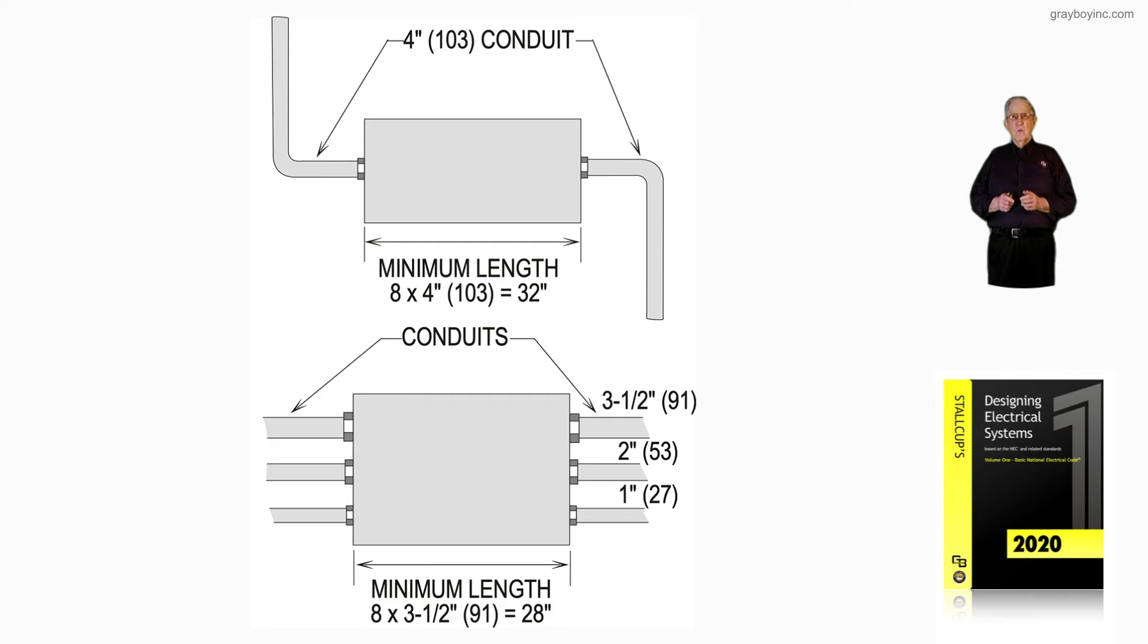Now the one at the bottom, you have more than just one conduit. So you would take the largest conduit, which is three-and-a-half times eight, and that would give you the length. So you can see it's eight times three-and-a-half, 28 inches.